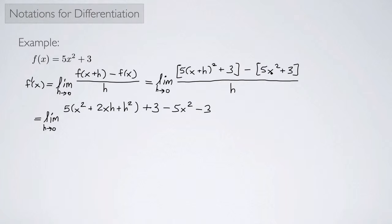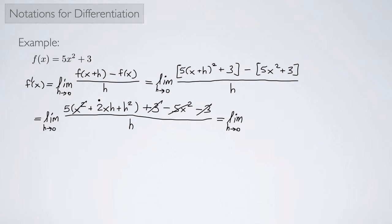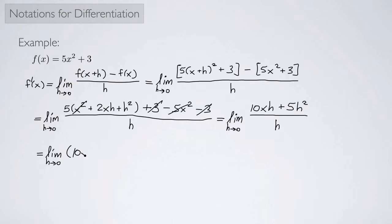Remember to distribute that minus sign across both terms, and all of this is over h. I see stuff that's going to cancel: I have 5x squared and minus 5x squared, and plus 3 and minus 3. So when I cancel that out I have the limit as h approaches 0 of 10xh plus 5h squared, all over h. The h's cancel, giving the limit as h approaches 0 of 10x plus 5h. Letting h go to 0, I'm left with 10x. So f prime of x is 10x — that's my derivative function.